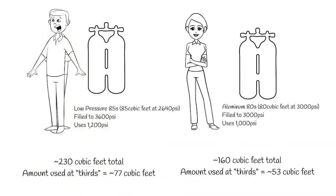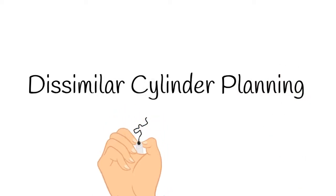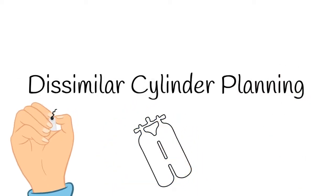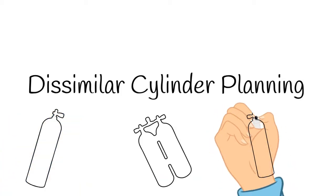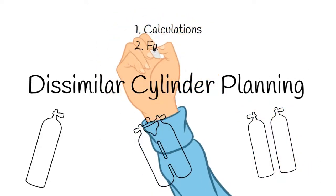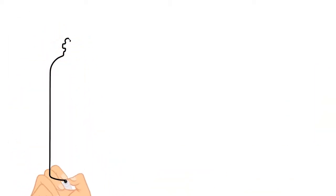That's why this is a crucial concept for every cave diver to understand, and that's why we apply dissimilar cylinder, dissimilar gas planning on any dive where the team has different sized cylinders. There's a bunch of different ways to look at this and a lot of different math that we can do, but the goal here is to look at the calculations that make this work and then look at the real life in-water method to understand dissimilar gas planning.